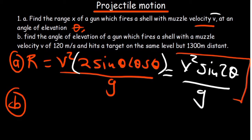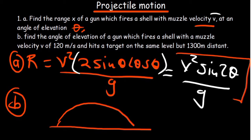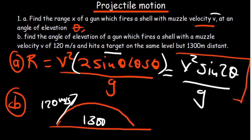Question 1b: find the angle of elevation of a gun which fires a shell with a muzzle velocity of 120 meters per second, hitting a target on the same level 1,300 meters away. We've been given the range (1,300 m) and the velocity (120 m/s), and we need to find theta. Since time is not given, we use the formula from Question 1.